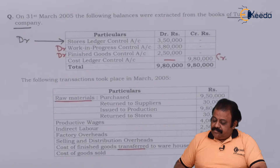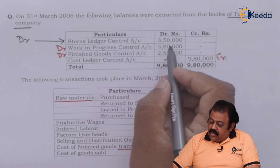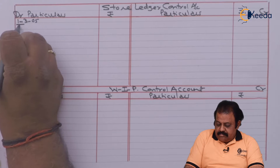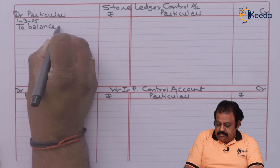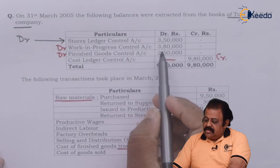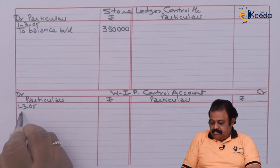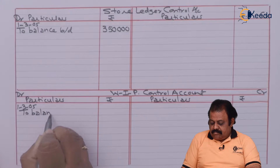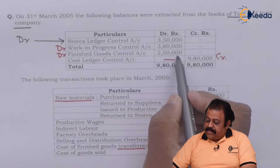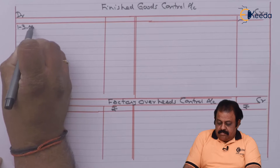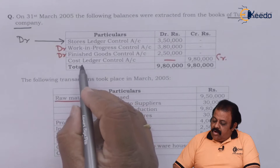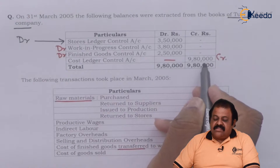Let us start doing the postings. Stores ledger control account opening balance 3,50,000; work in progress control account 3,80,000; finished goods control account 2,50,000; cost ledger control account credit balance 9,80,000.